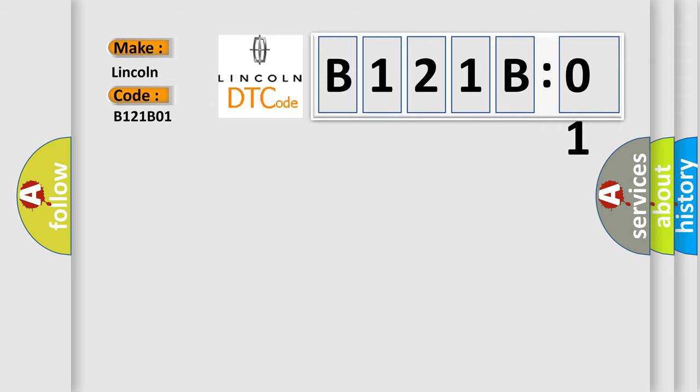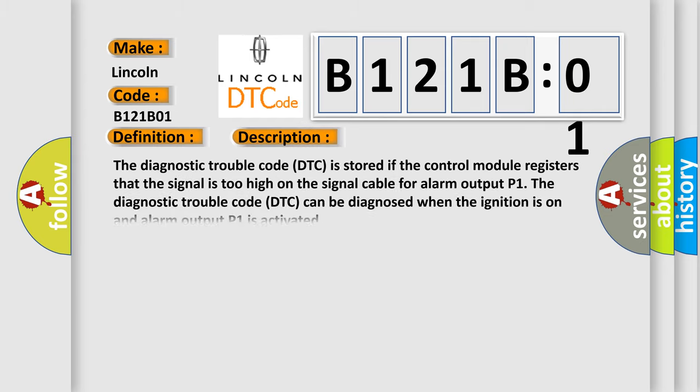The basic definition is alarm output P1 signal too high. The diagnostic trouble code DTC is stored if the control module registers that the signal is too high on the signal cable for alarm output P1.